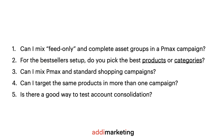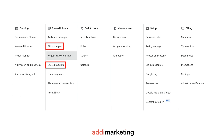Is there a good way to test account consolidation? Yes — use portfolio bid strategies and shared budgets to combine campaigns with similar performance targets. It simplifies management. For example, you can change targets more easily or remove poor-performing campaigns from the portfolio. If you don't find an answer to your specific question, write me in the comments. Thank you, and have a great day.